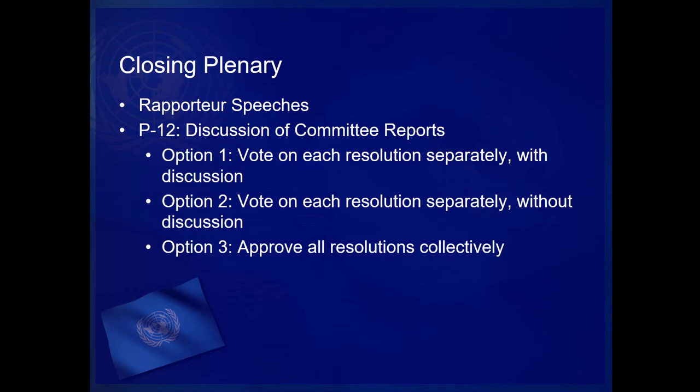Option 3 permits the General Assembly to approve all resolutions collectively. This motion requires two speakers in favor and two against, and requires a two-thirds majority to pass. If the motion passes, the resolutions passed by the committee are collectively approved by the General Assembly. This is the most common option used by the General Assembly in closing plenary session to approve resolutions adopted by a GA subcommittee.